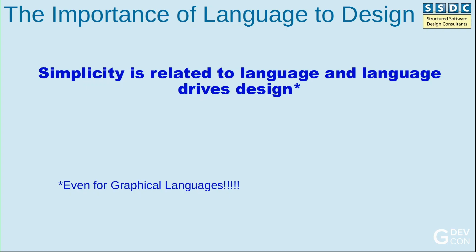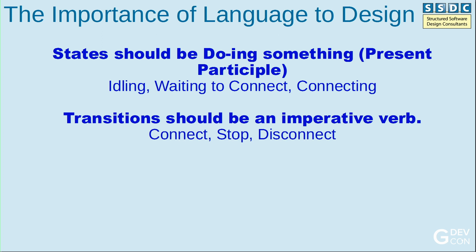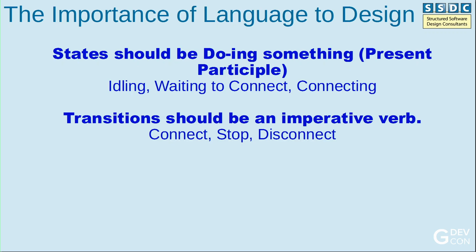Simplicity is related to language, and language drives design. When you're looking at a block diagram, you're reading that block diagram into words, and those words lead your design. States should be doing something - it should be the present participle. So 'idling,' not 'idle.' 'Waiting' and 'connecting.' That change has made subtle differences in the way I design my code and the way I feel stuff should go into the state. You can look at it and say, everything idling should go into the idling state.